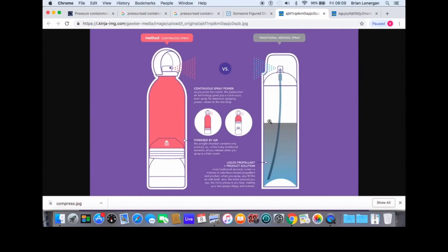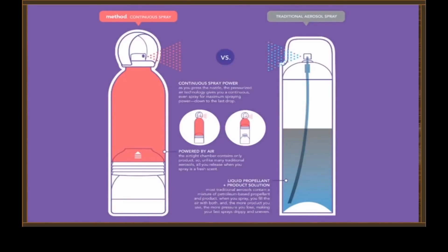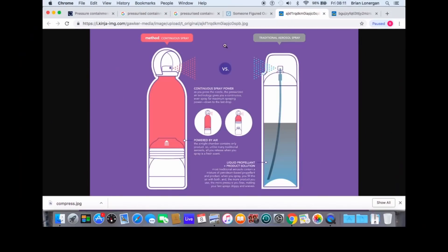Now, they're both pressurized. But this one here — when you press down, you're pumping air underneath which pushes this up and pushes out the liquid through the nozzle. No, we're not pumping air into the can. Pressurized air is already in a bladder in the bottom of the can. When you press the nozzle, the pressure from that bladder pushing up on the liquid forces it out the nozzle. That's how that thing works.